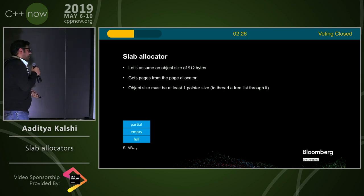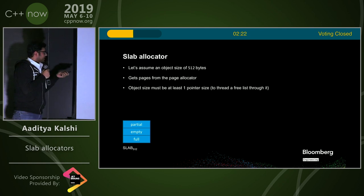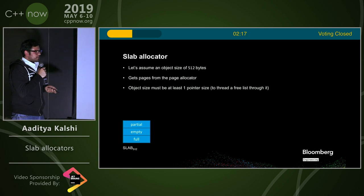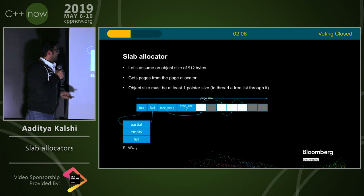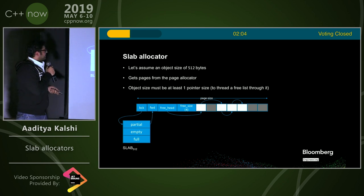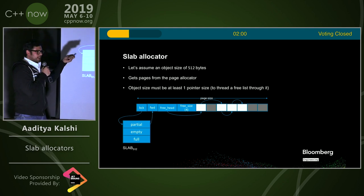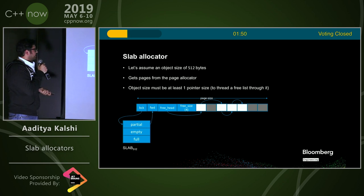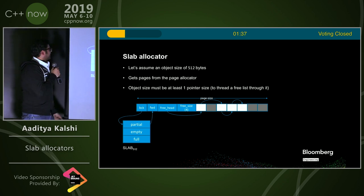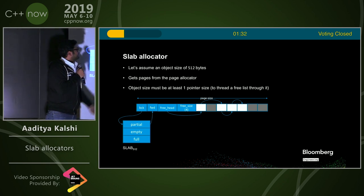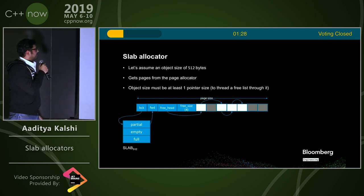A simple slab for 512-byte objects has three doubly linked lists: a partial list, an empty list, and a full list. These lists are not for individual allocations but for slab pages themselves. A slab page has a forward and back pointer to attach to one of these lists, a singly linked list called free_head, and we also know the free size in constant time. This particular slab page has four open slots and three used slots — gray stands for used, white is free. There are seven total because with a single page you can fit eight, but we're using some space for metadata.